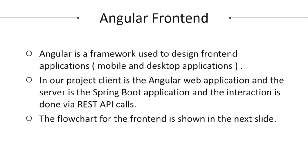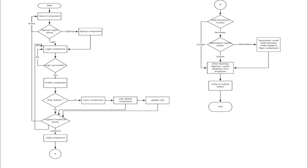In our project, the client is the Angular web application and the server is the Spring Boot application, and interaction is done via REST API calls. Angular is composed of components, which are a combination of templates and classes — templates are displayed units and classes control the templates. In the web application flowchart, when a user navigates to our website they are rendered to the home component, from where they can sign up and log in. After successful login, the user can create learning objectives and corresponding relationships.